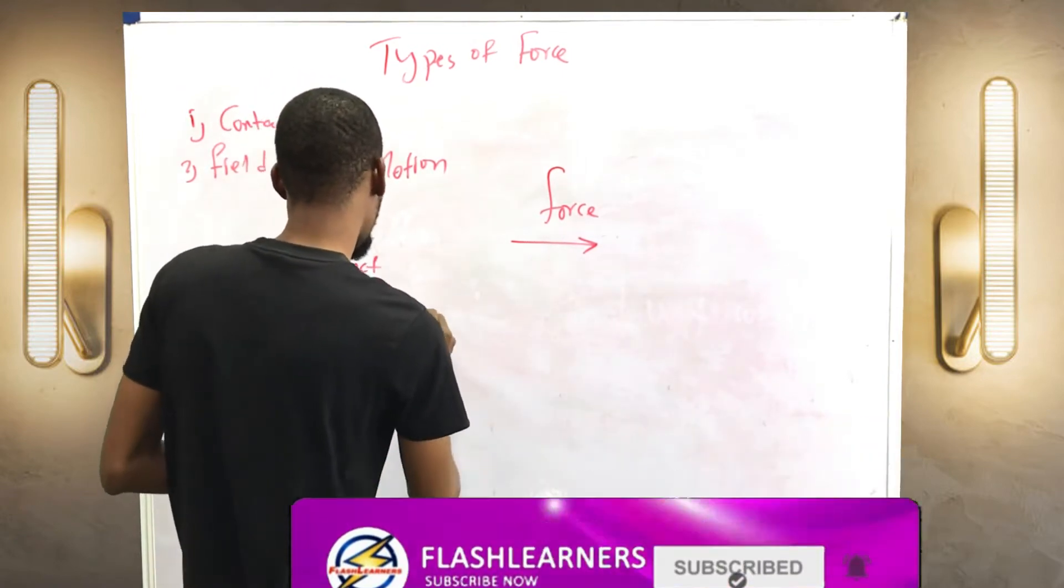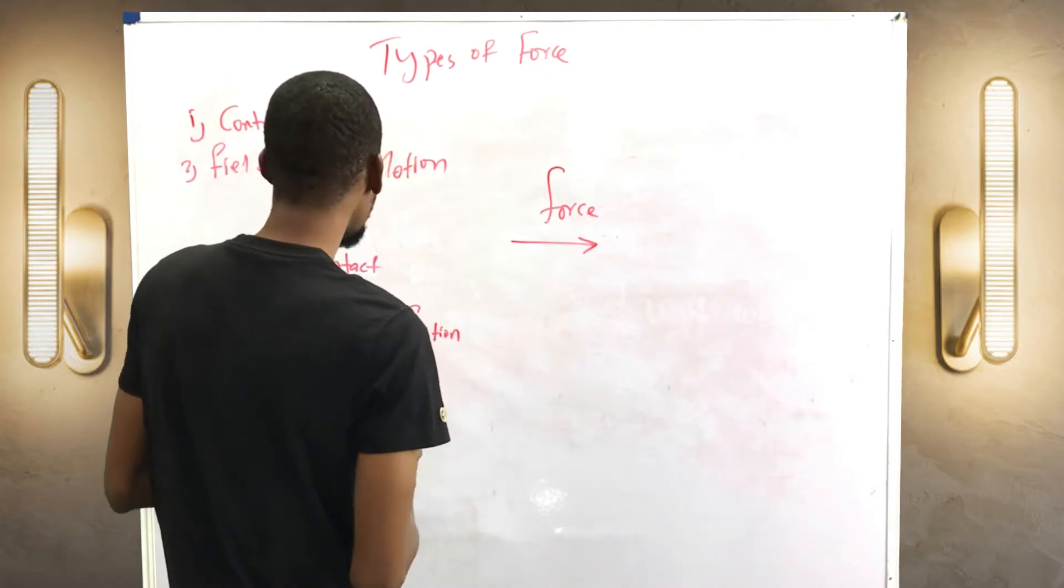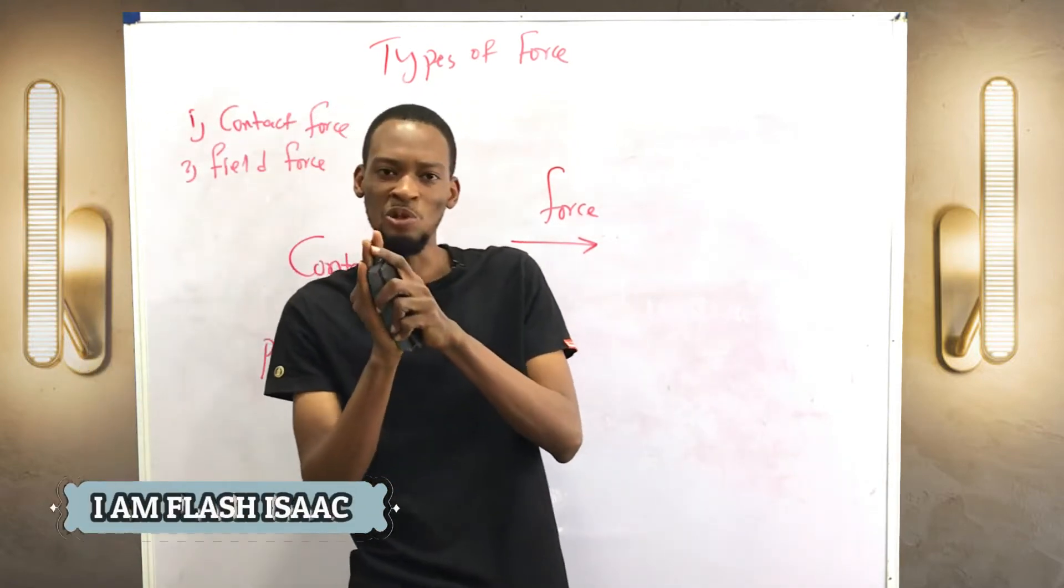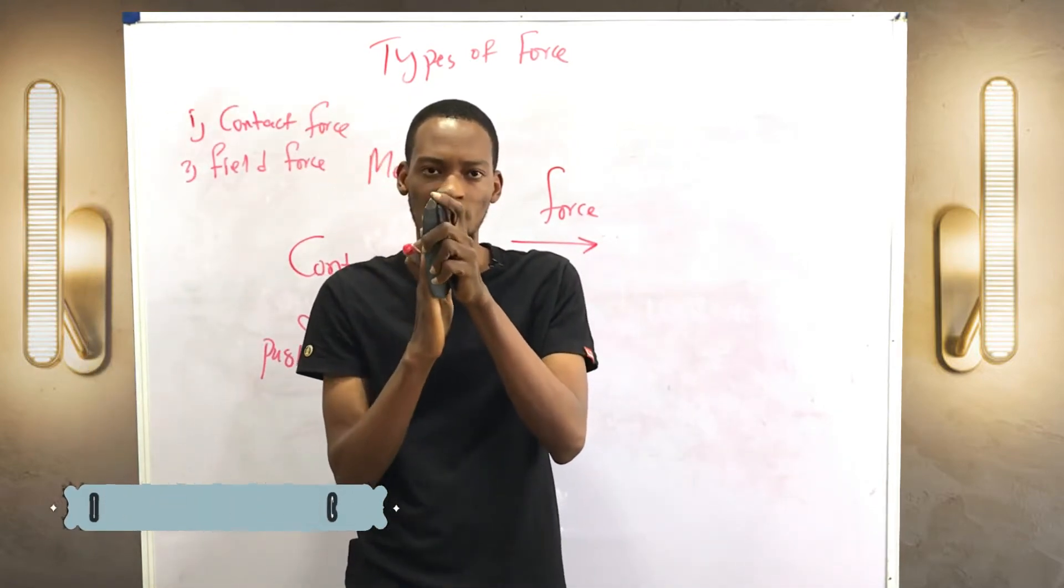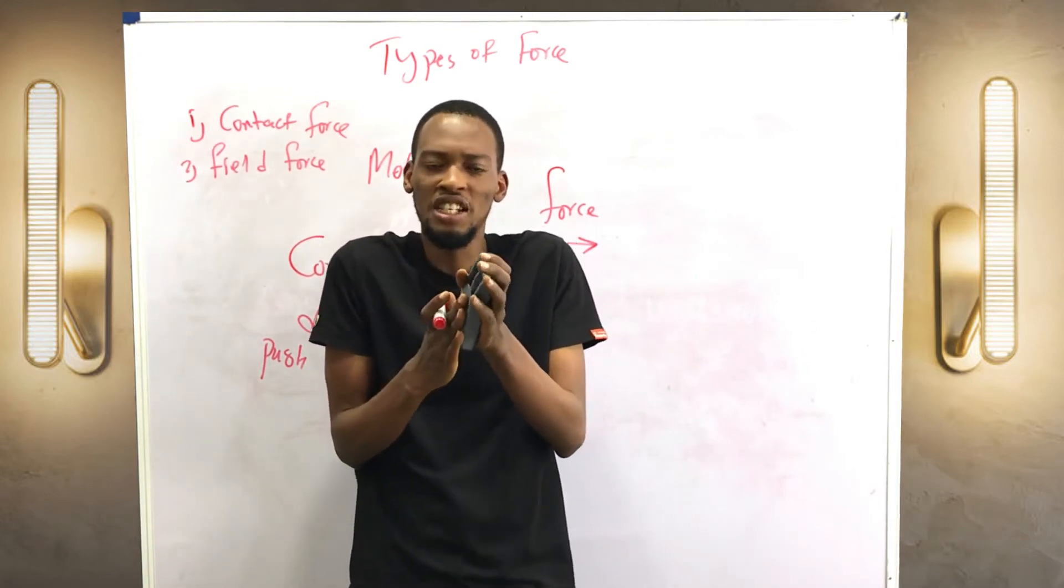And we have another contact force, which is friction. Friction is a contact force. It means there is contact between the body. Once a body tries to slide through another, as it's sliding, there is a contact force opposing motion. That's frictional force.